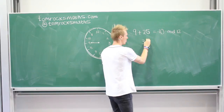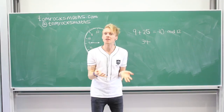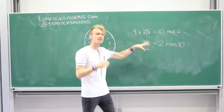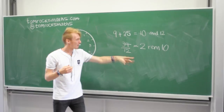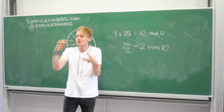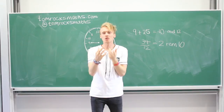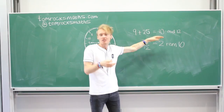How many 12s go into 34? 34 divided by 12 is 2 remainder 10, because two lots of 12 give you 24, and then there's another 10. In modular arithmetic, the 2 lots of 12 don't matter — we ignore them. It's just the remainder of 10 that's the key. That's the only bit we care about. So the answer is simply 10 mod 12.